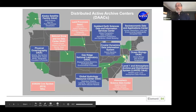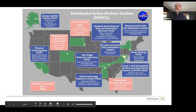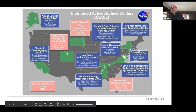This data is all distributed through what are called DACs that NASA runs, and there are 12 of these throughout the United States. Each one typically has a different focus — for example, the PO DAC, the Physical Oceanography DAC, exclusively distributes oceanography data. LP DAC distributes data about land cover and land products. The Alaska Satellite Facility distributes all the SAR data — synthetic aperture radar — which is used for a lot of different applications, including sea ice and polar research.